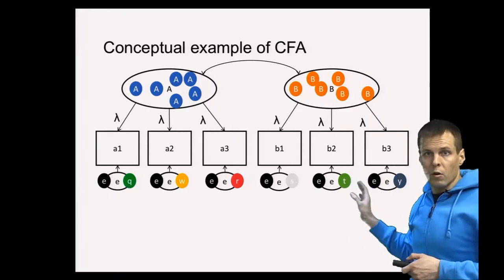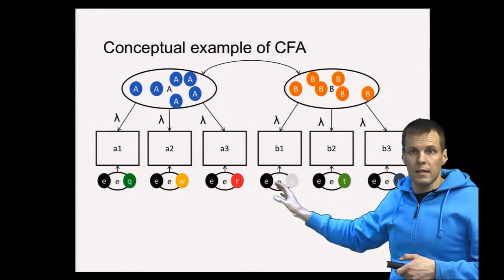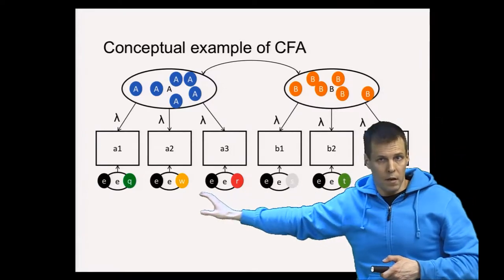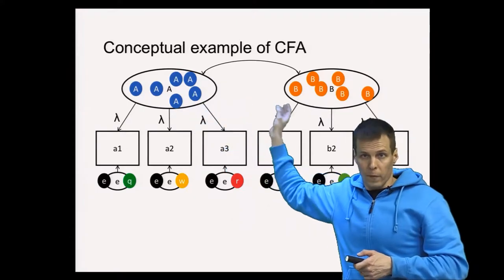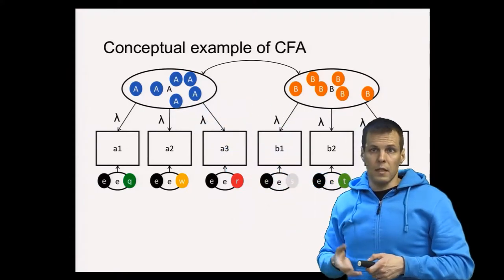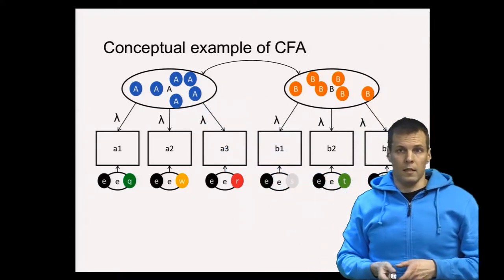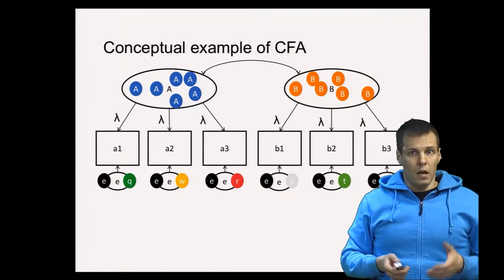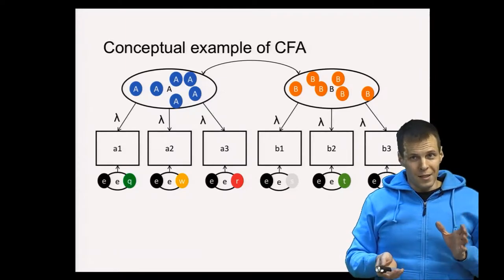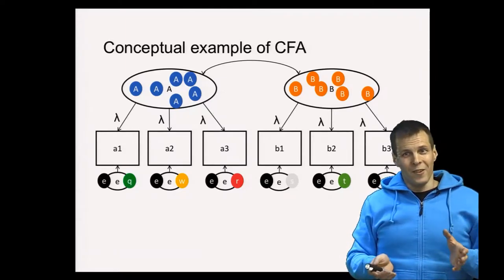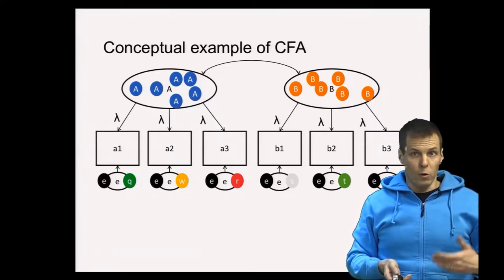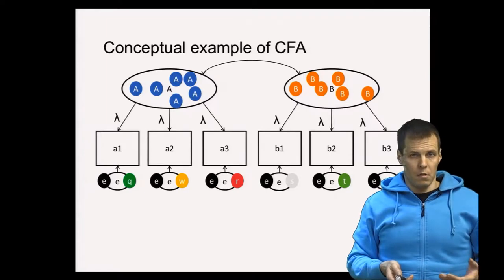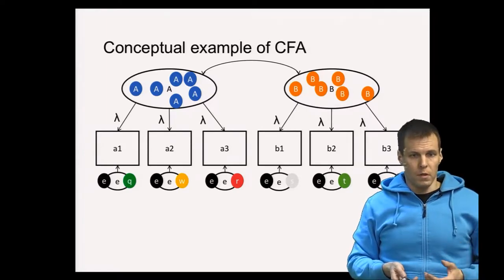So these are uncorrelated, distinct sources of variation for each indicator, and then we have the two common factors — that's the ideal case. Sometimes your data are not as great as you would like, and confirmatory factor analysis allows you to model problems in your measurement as well.